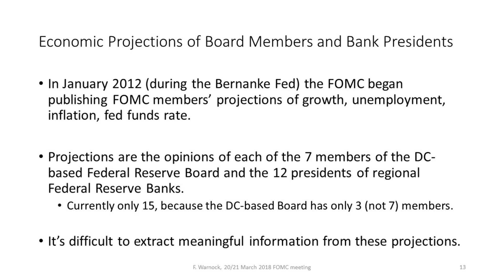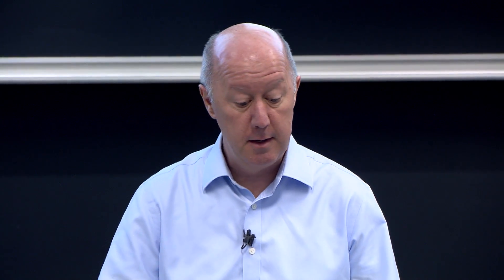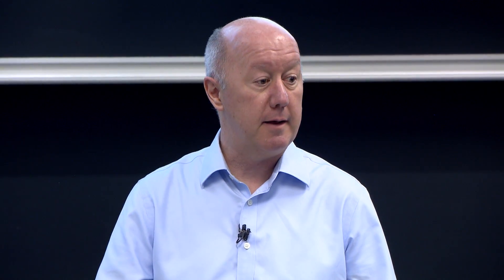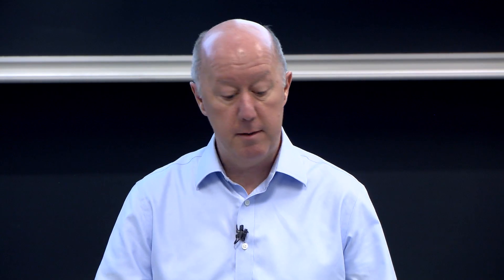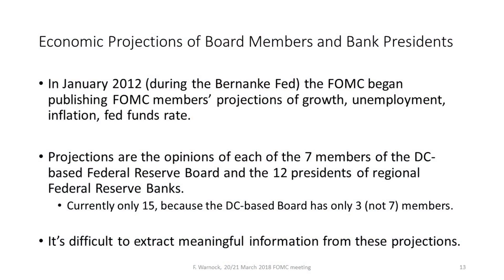Then you get to the economic projections — something that's very new for the Fed. January 2012 was the first time they actually published their projections; before that they never did. At the end of every other FOMC meeting, they release the projections. These projections are the opinions of each of the seven board members of the Board of Governors in Washington, DC, plus the 12 presidents of the regional Federal Reserve banks.